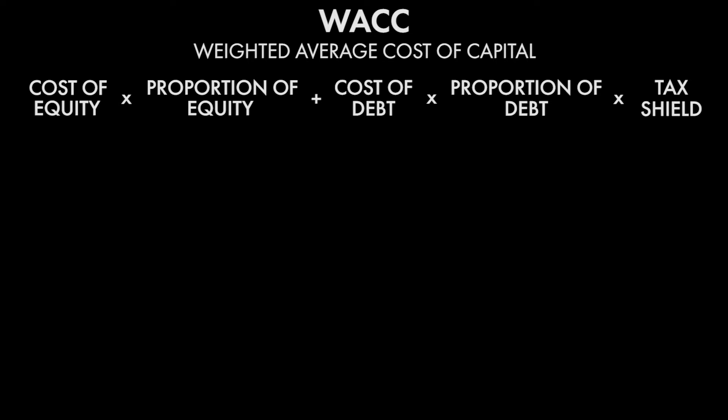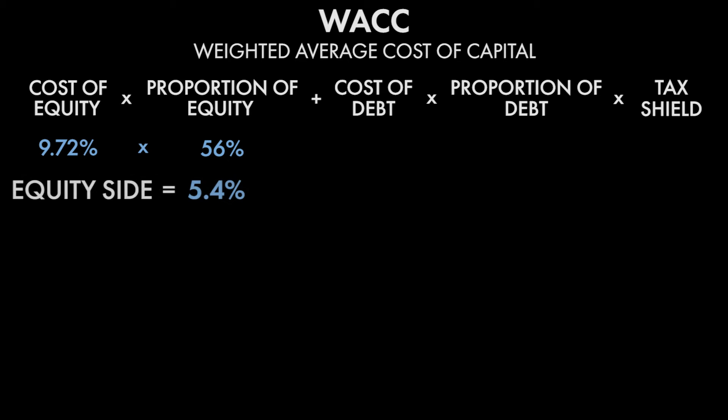We talked about the tax shield earlier, using income taxes as an example, so hopefully you remember that. We know that our cost of equity was around 9.7% — we calculated that when we did CAPM earlier for this entertainment company. Our proportion of capital that is equity is right around 56%. So we calculate 9.7% times 56% and we get 5.4%. That's the half of WACC that comes from equity.